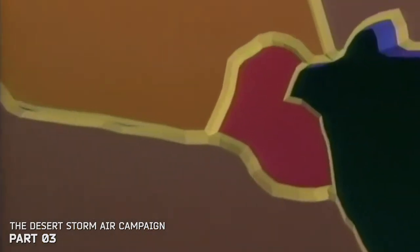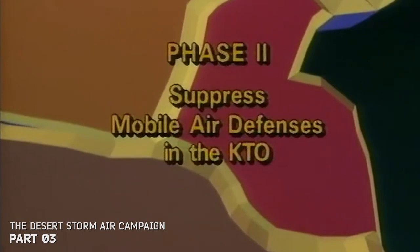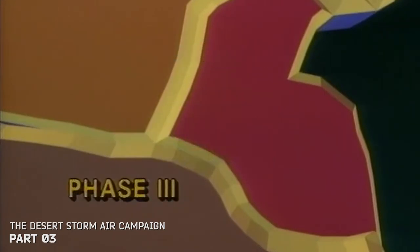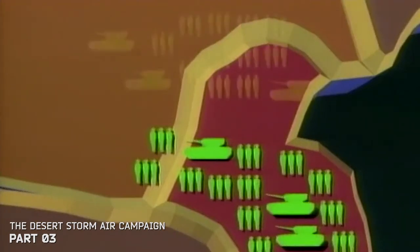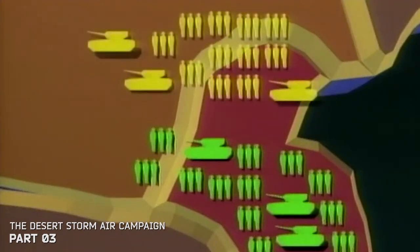Phase two would be short. The Allies planned on taking one day to suppress mobile air defenses in the KTO, or Kuwaiti Theater of Operations. During phase three, Allied air power would continue to hit the targets of phase one, but would shift their attack to the Iraqi field army in the KTO — totaling close to a half million men, over 4,000 tanks. An important target would be Saddam's crack troops, the Republican Guard.